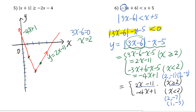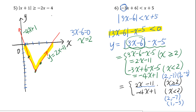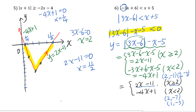Looking at the inequality, it is less than 0, which means the part of the graph below the x-axis is the solution. We find the x-intercepts: setting negative 4x plus 1 equals 0 gives x equals 1/4, and setting 2x minus 11 equals 0 gives x equals 11/2. Therefore, the solution is 1/4 less than x less than 11/2. This is the final answer to the absolute value inequality.